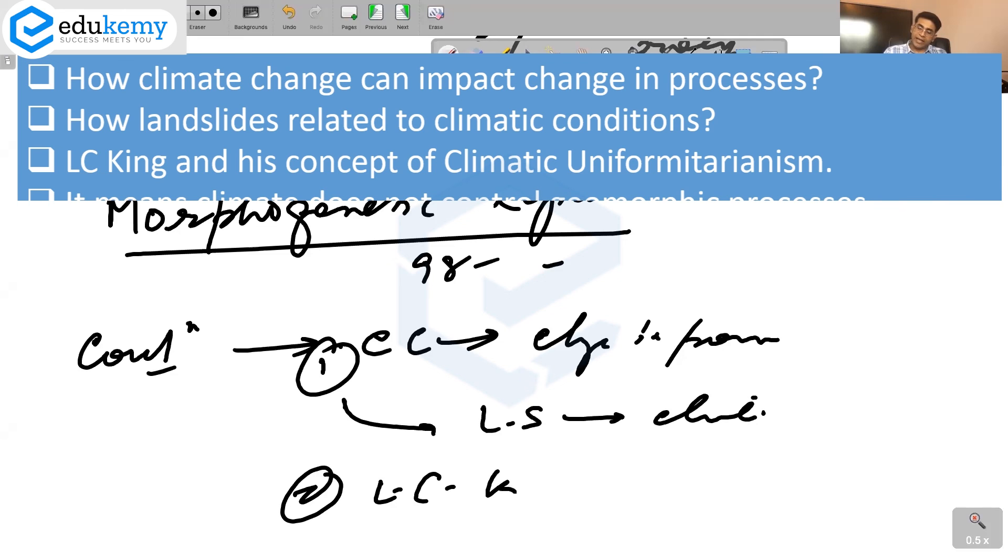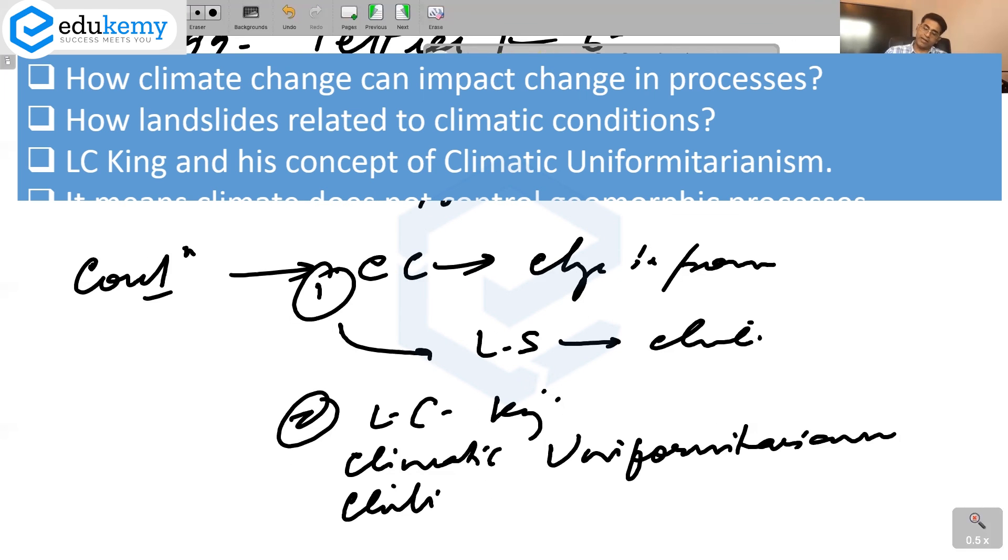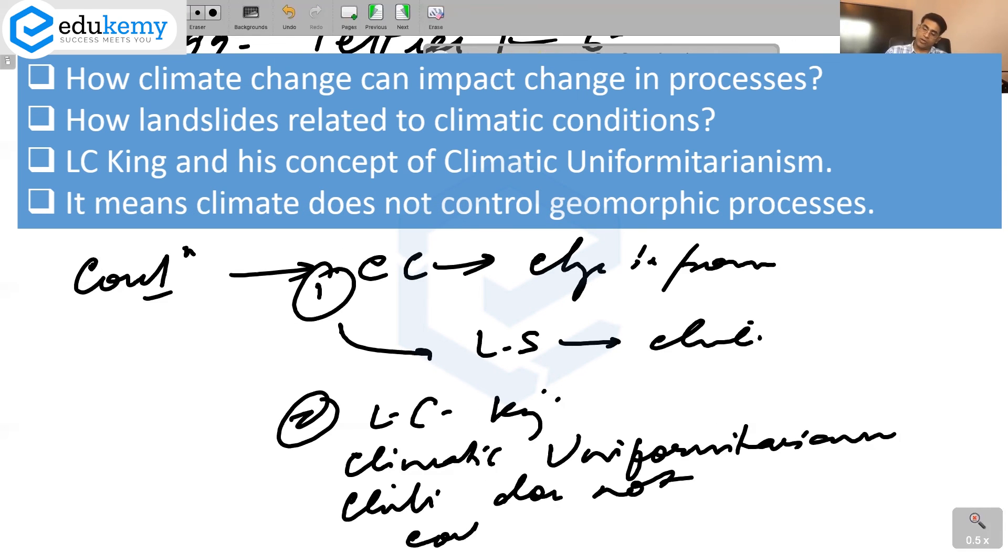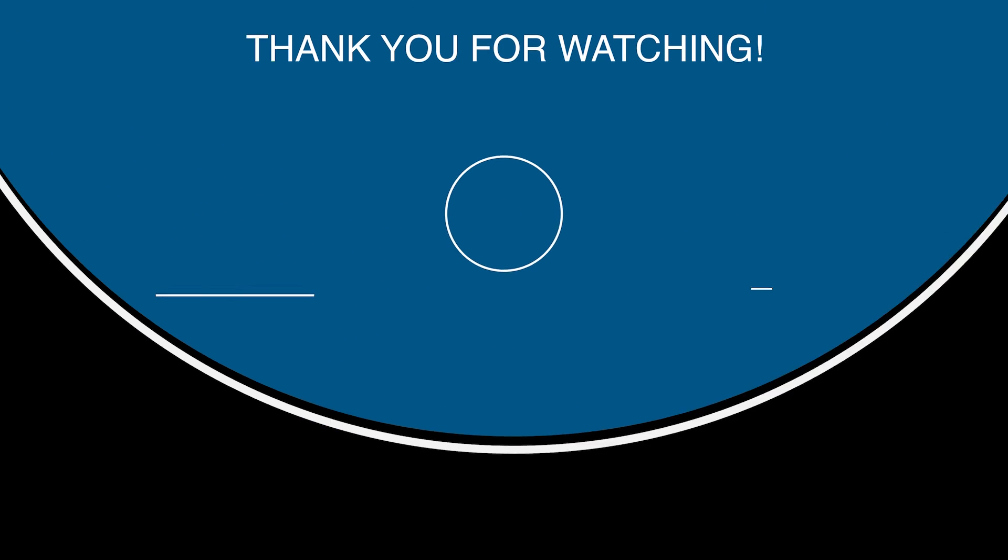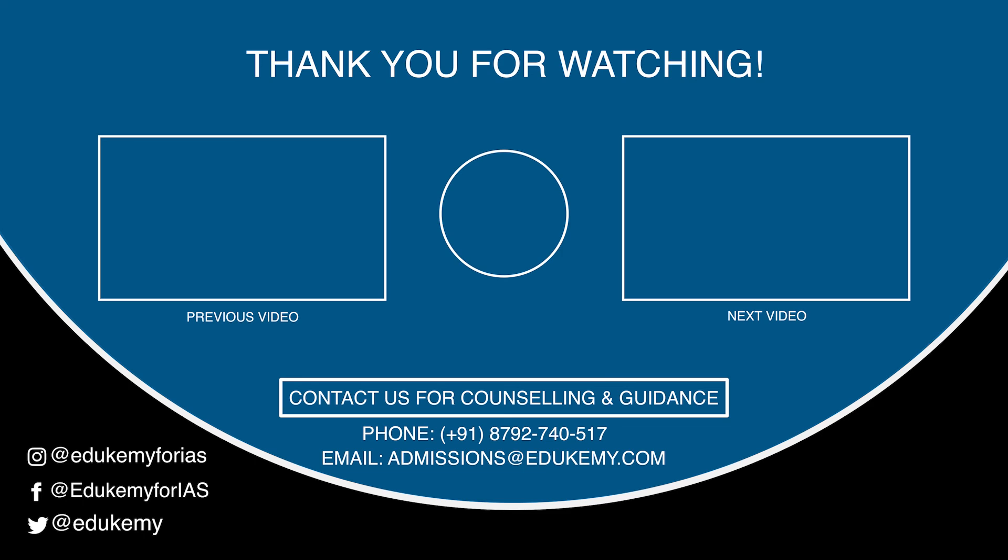You can also put the debate of L.C. King and his concept of climatic uniformitarianism - climate does not control geomorphic processes. This could be the conclusion. Climate and this is one question I think can be important for you - how does climate control the geomorphic processes? Climate change is...